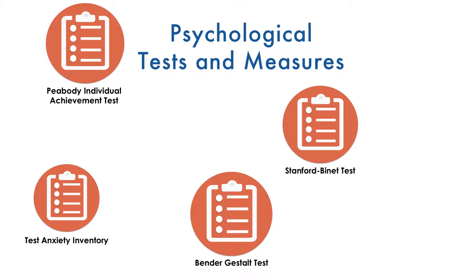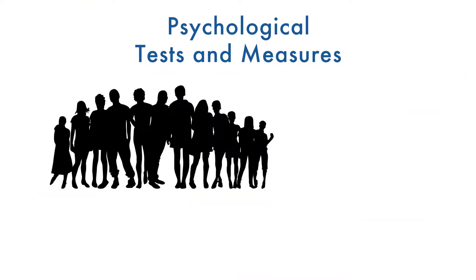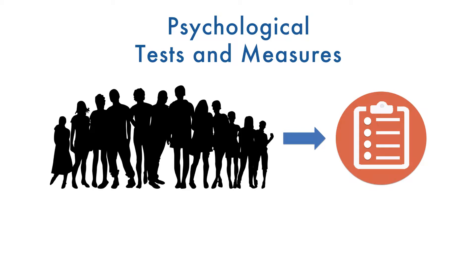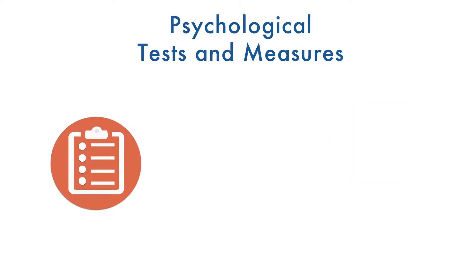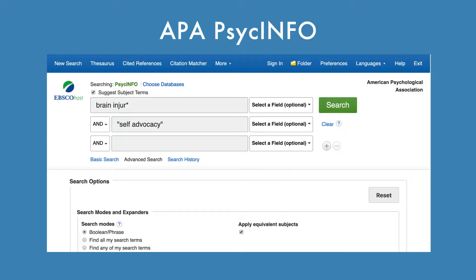As a psychology student or practitioner, you'll most likely need to find information about psychological tests and measures at some point in your career. You may have a specific population or topic that you're researching and need to identify an appropriate research instrument to use. Or you may have a particular psychological test or measure in mind and want to see how it has been used by other researchers. In this video, you'll learn how to use the Tests and Measures field in APA's PsychInfo to accomplish both goals.